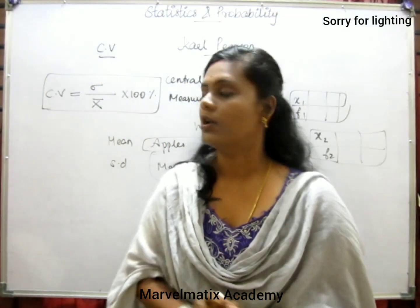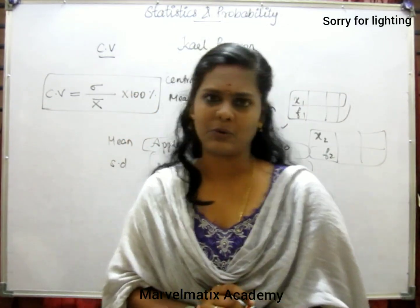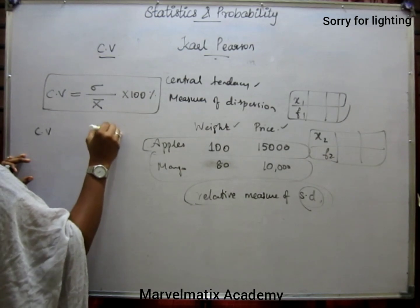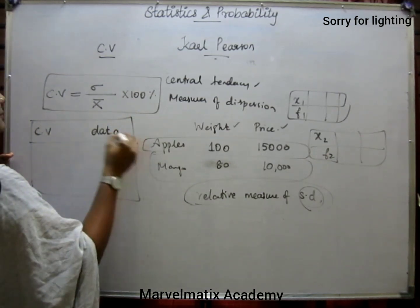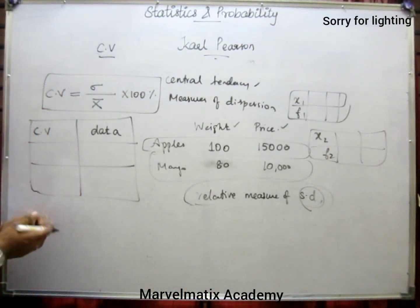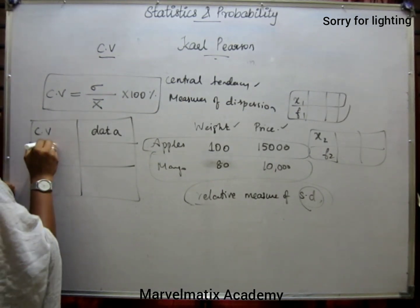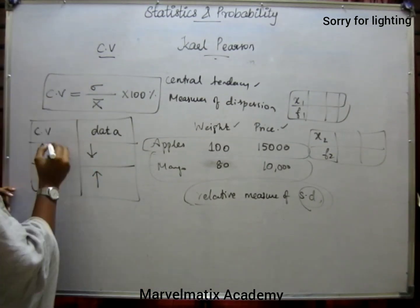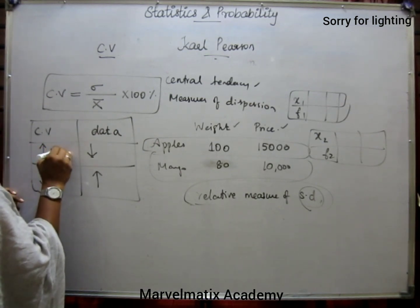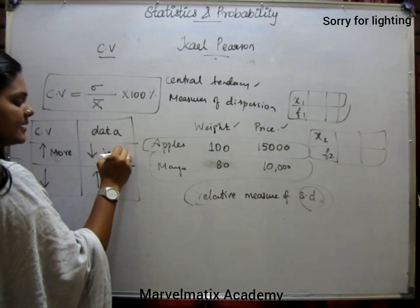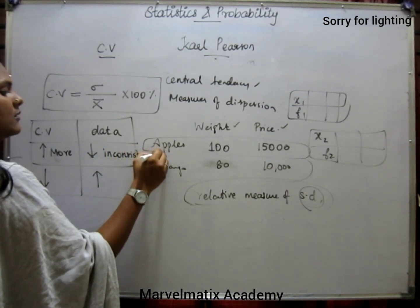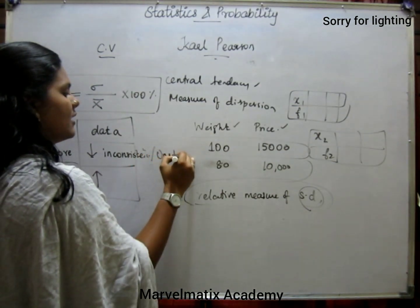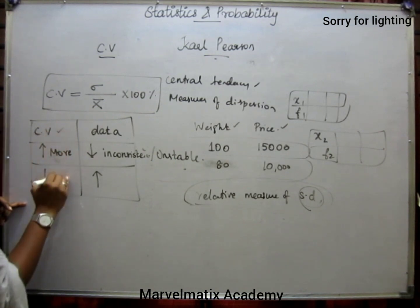Now, the coefficient of variation is used to compare datasets. We compare the CV values — less CV means more consistency in the data.